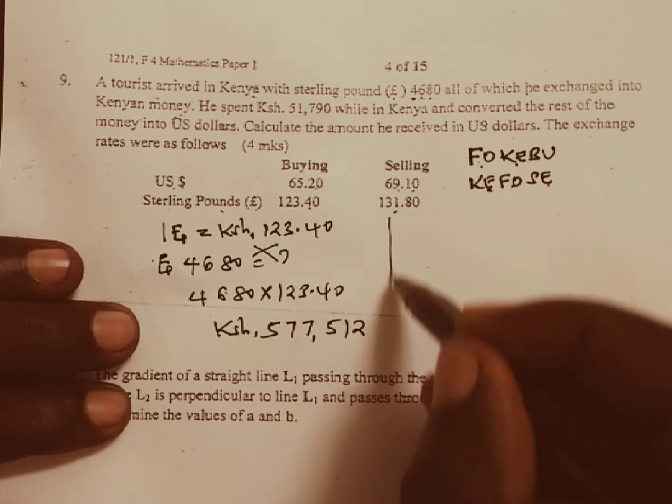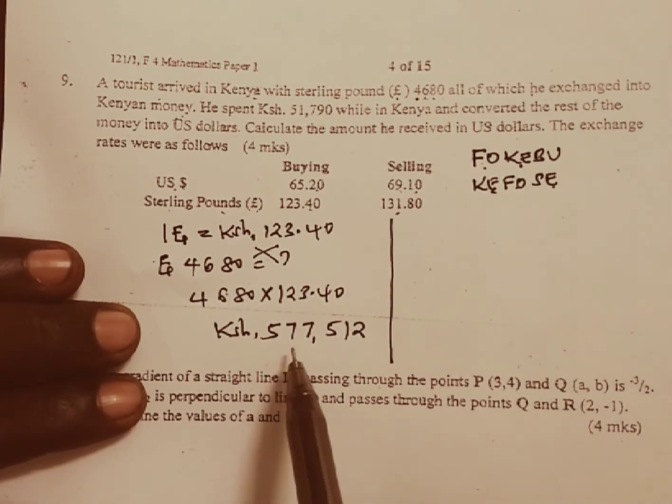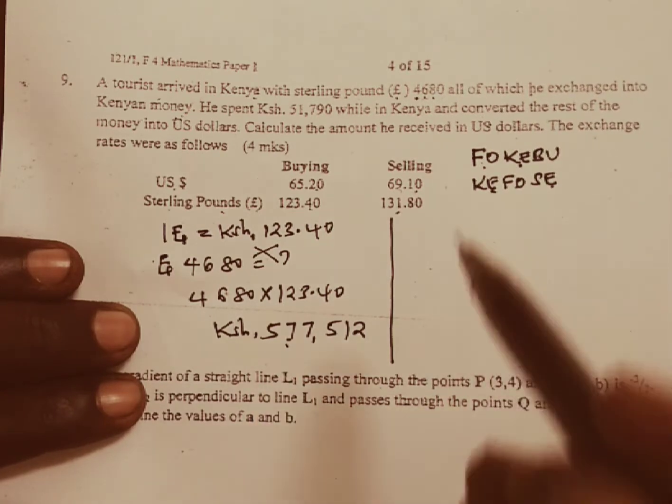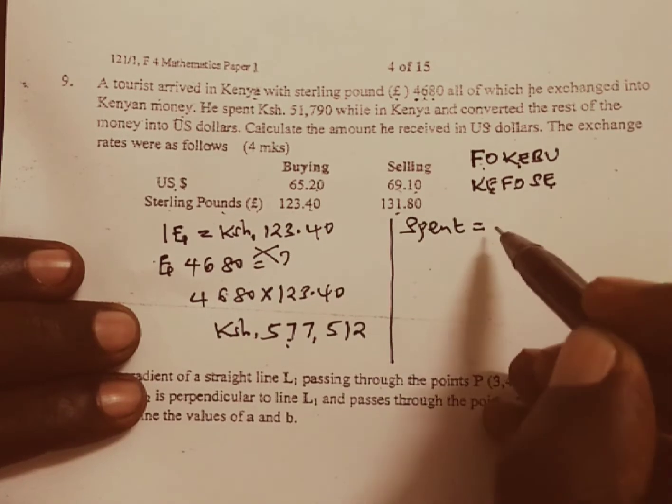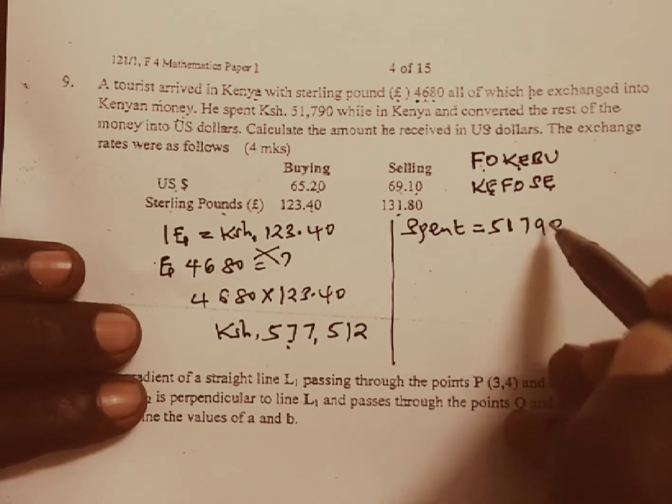So this is the total amount of money the tourist received or exchanged in Kenya shillings. Then he spent the amount spent while in Kenya was 51,790.